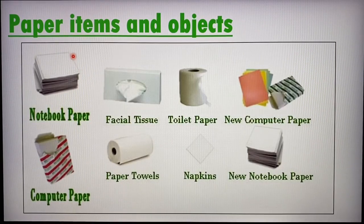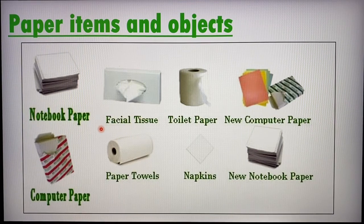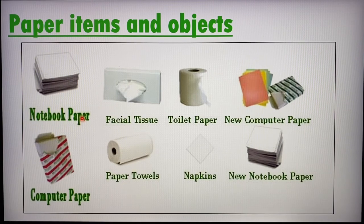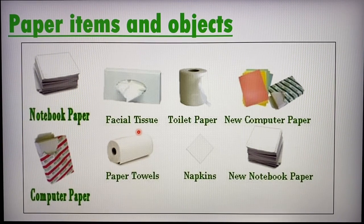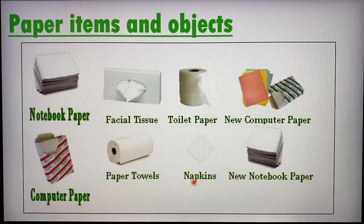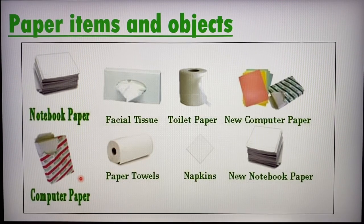Next we have paper. Some paper products you can see include books, magazines, newspapers, facial tissue, toilet paper, paper towels, napkins, serviettes, and so on. All these products are made of paper.